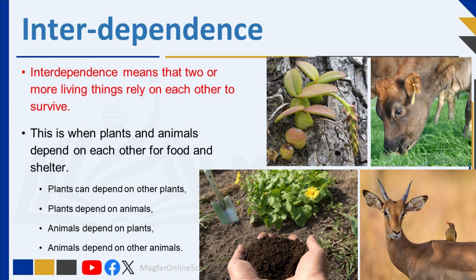Some plants depend on animals for protection. An example is the ants' nest in thorn trees. Ants eat some of the leaves, but if elephants eat the leaves, the ants bite the elephant to protect the tree.